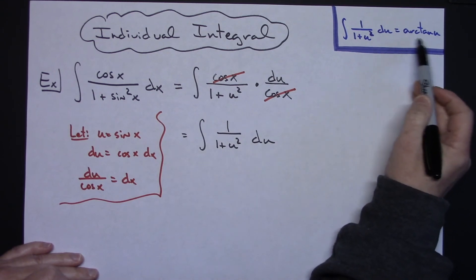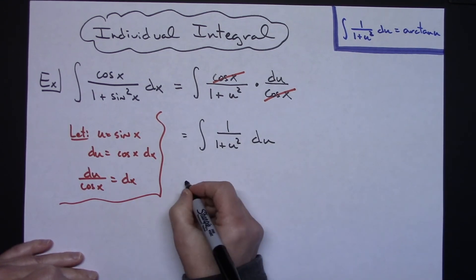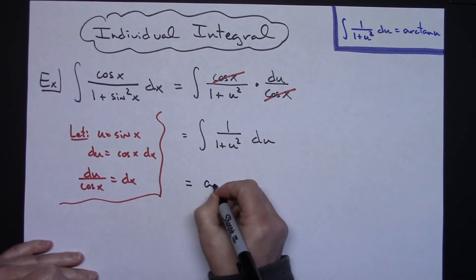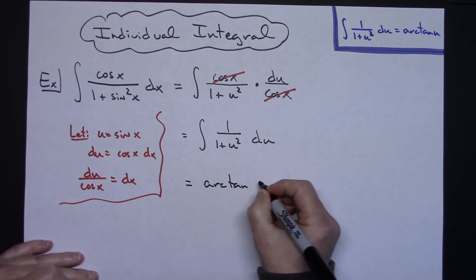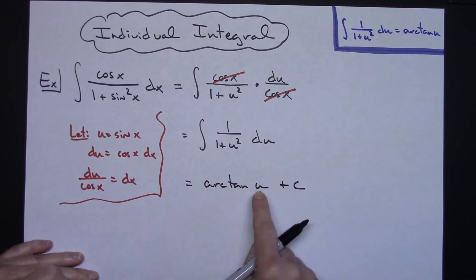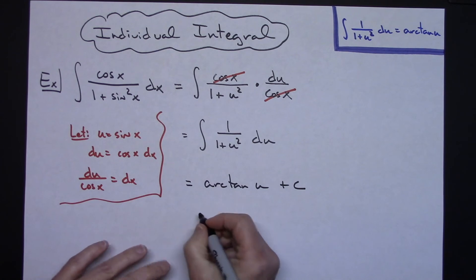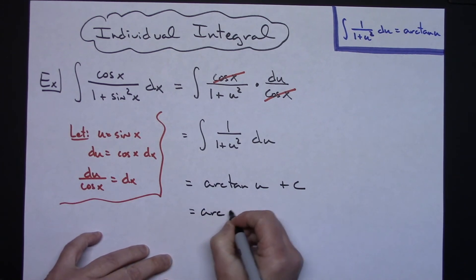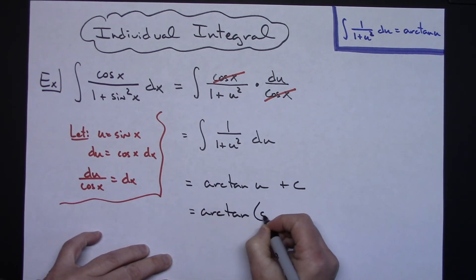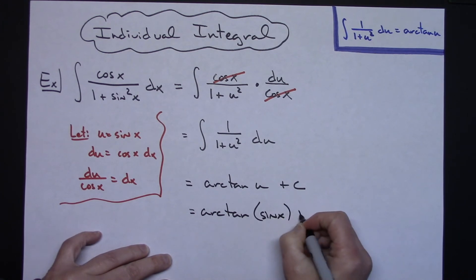As long as you have this memorized as arctan, this integrates very easily to arctan u plus c. Replacing u with sine x, we have arctan of sine x plus c.